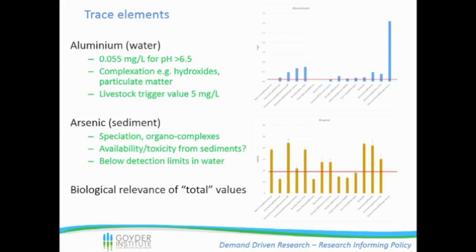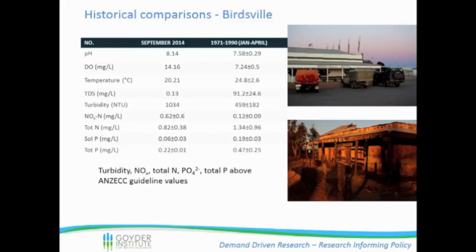So when we're measuring total values of these elements, or of nitrogen or phosphorus, we always need to keep some biological context with them. We did find one site in Birdsville where we could make historical comparisons with more than one value. The take-home message from this is that in terms of turbidity, nitrates, total nitrogen, phosphate, and total phosphorus - for both our values and the historical data - we're generally exceeding guideline values. So you can start to see a little bit of a pattern here with a lot of these nutrients we were looking at.